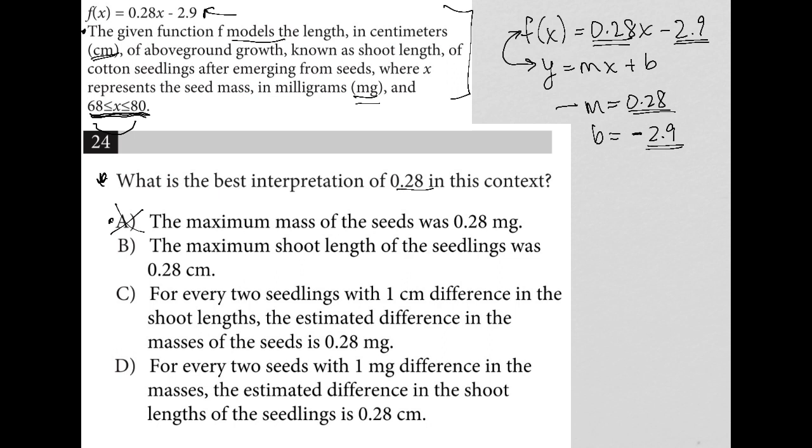This is a slope, so slopes never tell you the maximum anything. It just tells you how something's growing or increasing or decreasing. So not a maximum length, although it does have to do with length but B is out of there. Choice C: for every two seedlings with one centimeter difference in the shoot lengths, the estimated difference in the masses of the seedlings is 0.28 milligrams.